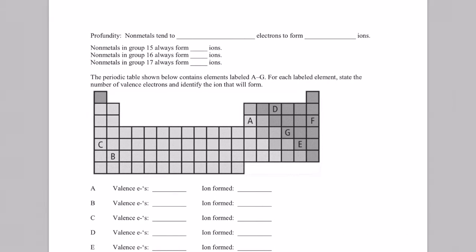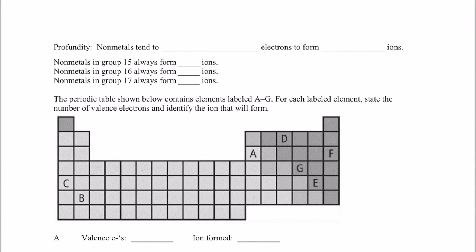All right. So, profundity. Non-metals tend to gain electrons. Now, those electrons don't appear out of thin air. Please don't think that. They actually gain them from the metals that are losing them. So they work very nicely together. One likes to lose, one likes to gain, and so they work together in doing so. When they gain them, they form negative ions. What's the name for a negative ion again? That's right. An anion.